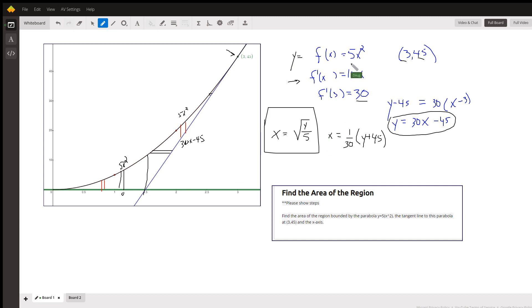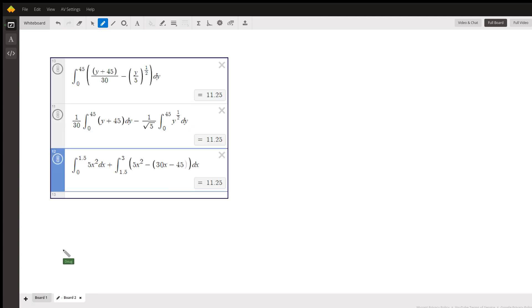And if I solve this equation of the tangent line for x, x equals 1 thirtieth of y plus 45. And then we have an integral that looks like from 0 to 3 of the x-coordinate at the right, which is 1 thirtieth of y plus 45, minus the x-coordinate at the left, which is the square root of y over 5. Here's what it looks like.